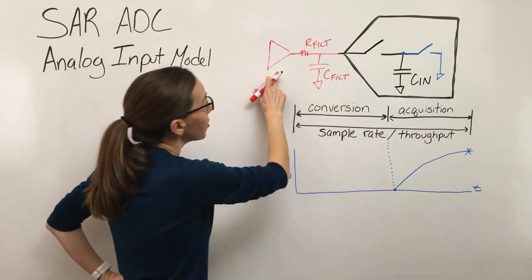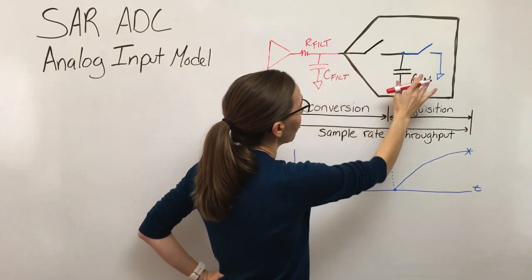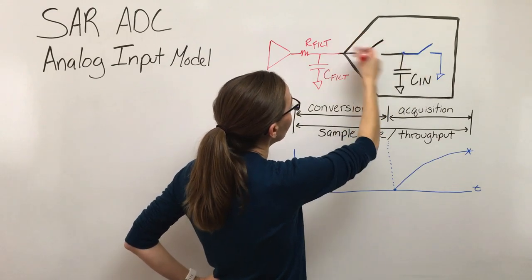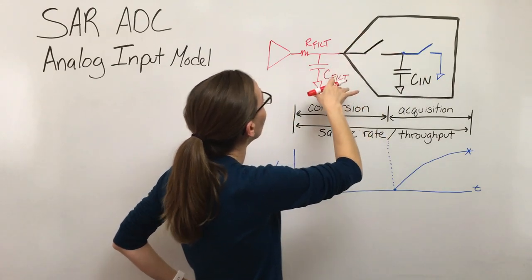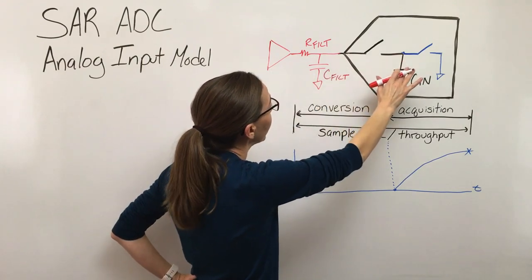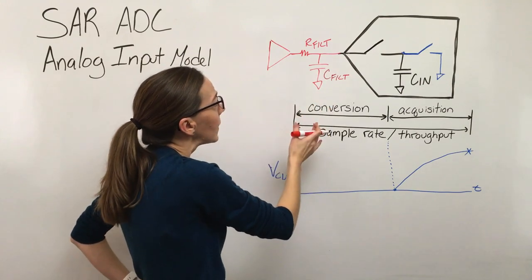We need this driver to get this voltage on the sample cap back up. Once it does this disturbance when it drags this node to ground, this driver is needed to bring the voltage back up to where it needs to be. We also have this RC filter which does a lot of